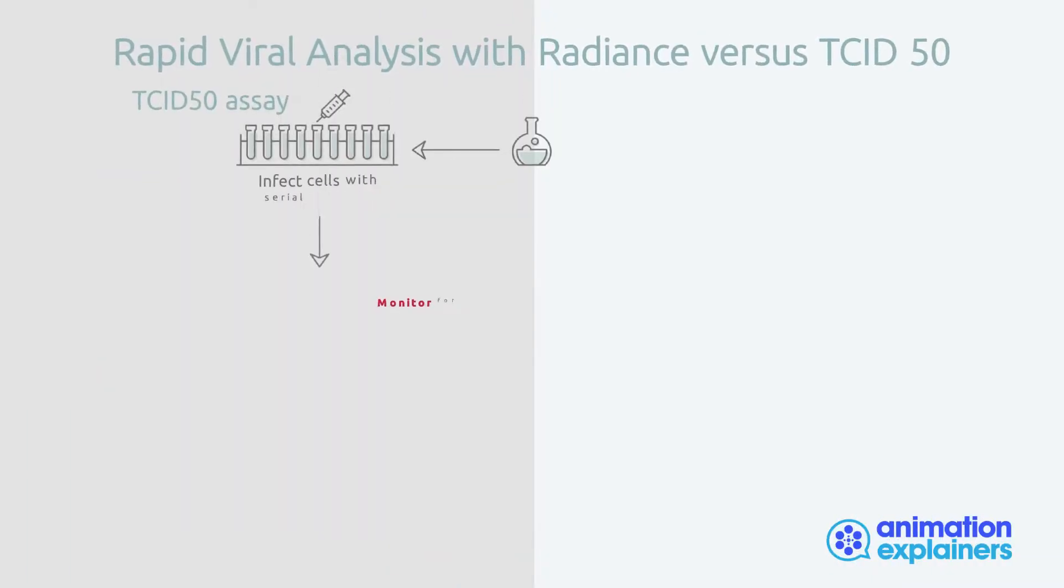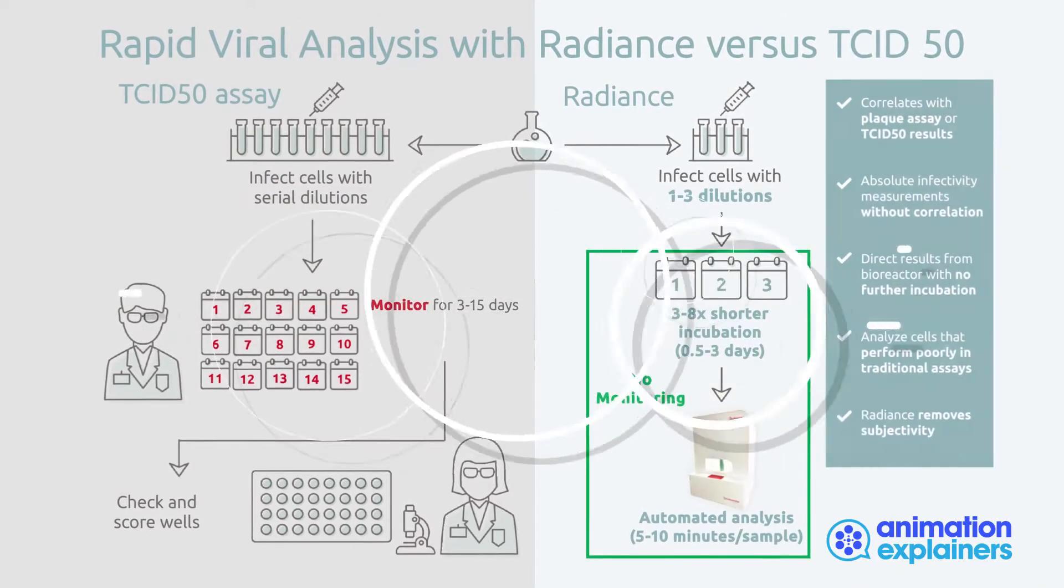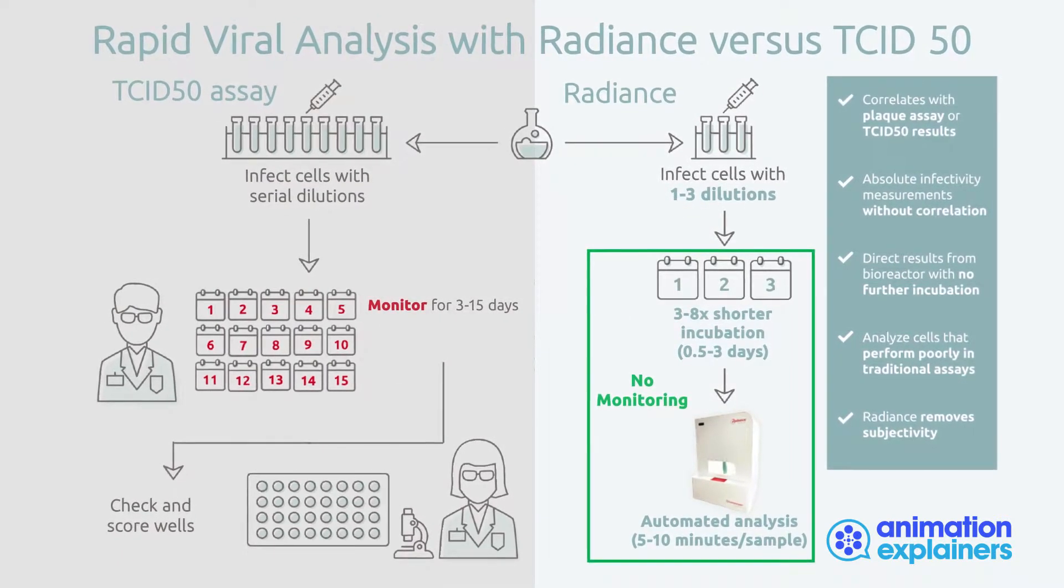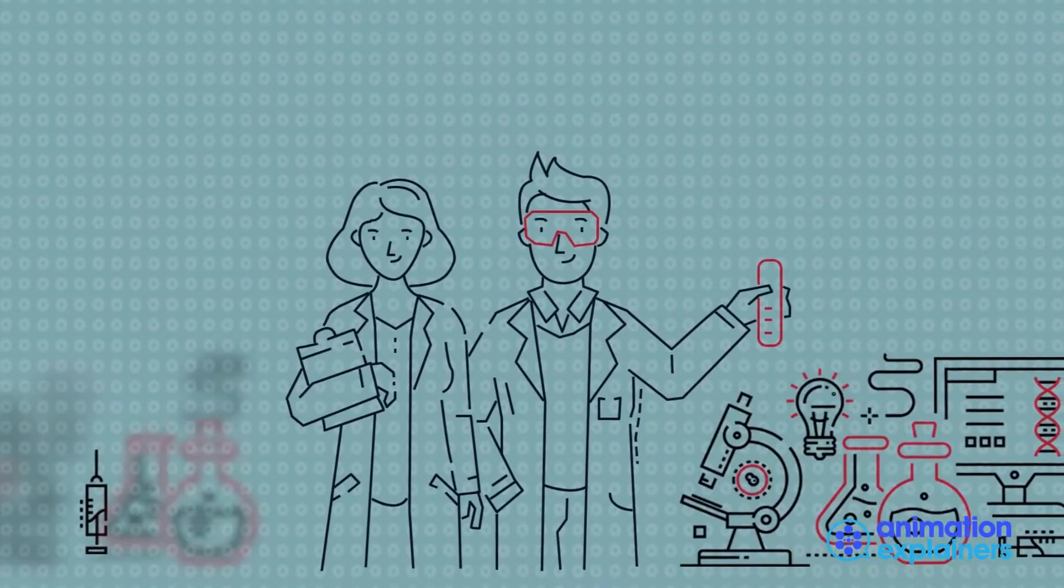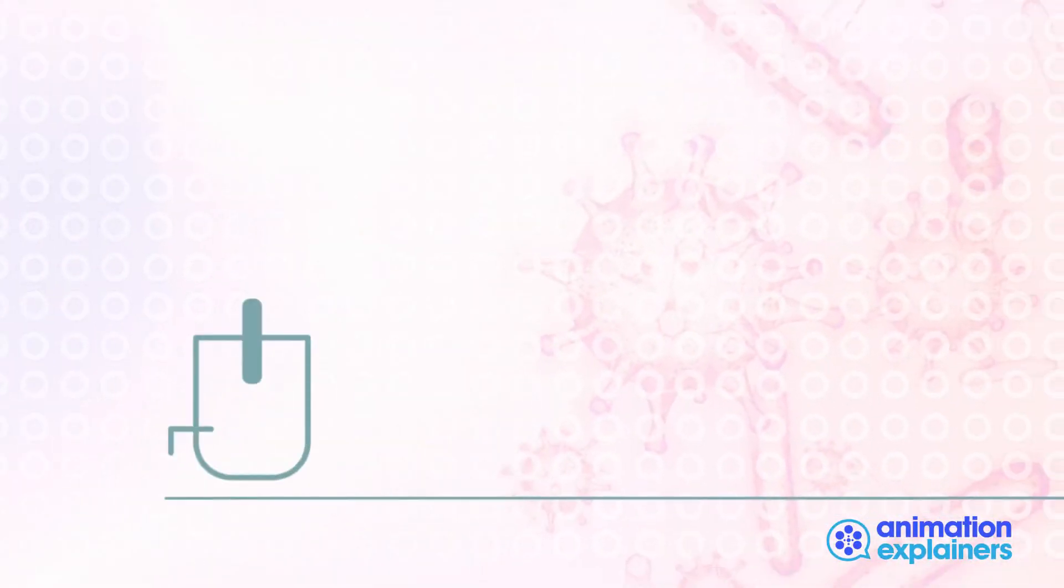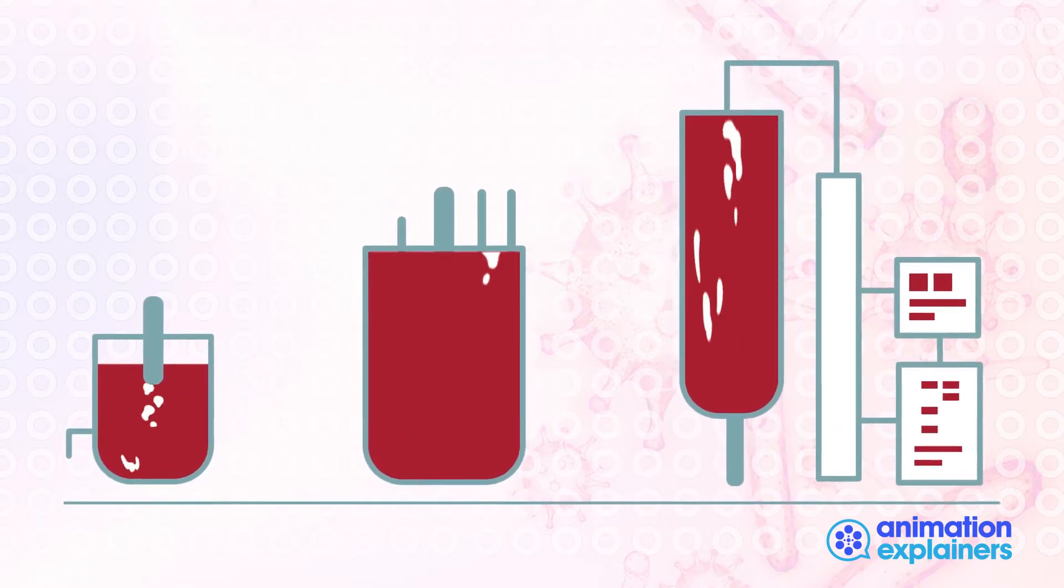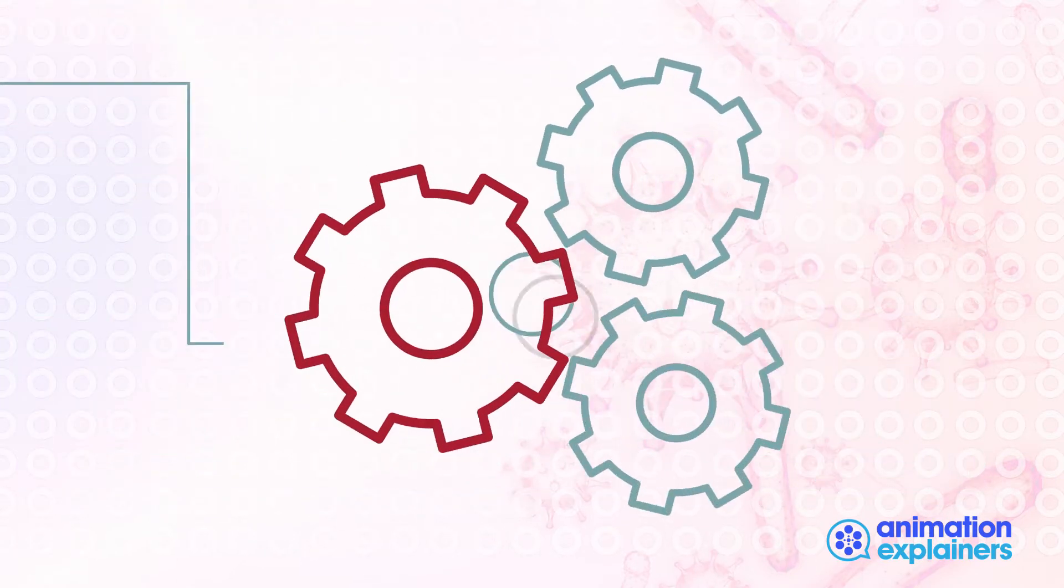The need to accelerate vaccine development and production timelines has never been more important. Real-time measurements of viral infectivity throughout the vaccine manufacturing process ensures timely viral titers for rapid optimization and scale-up across both upstream and downstream processes.